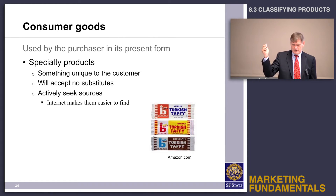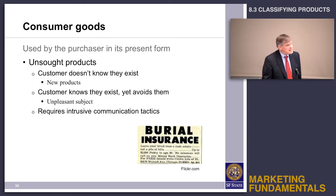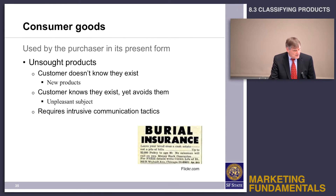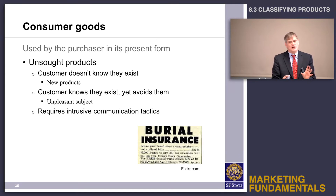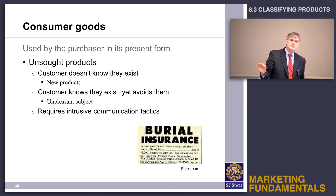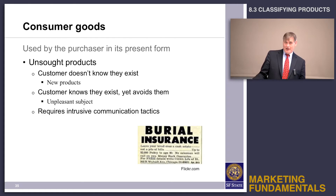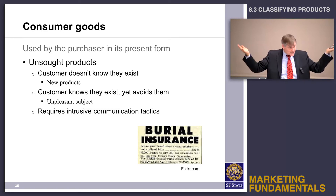I have here an example of a specialty product: retro candy — Bonomo's Turkish Taffy. The last kind of consumer good used in its present form is unsought products. There are two kinds of unsought products and they're polar opposites: one kind is a product that I know about and I don't want, and the other kind is a new product that I might want but have never heard of.